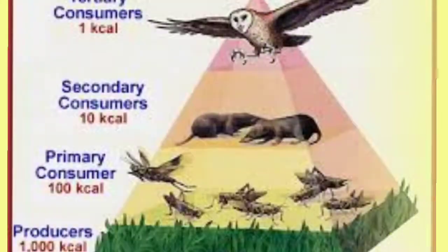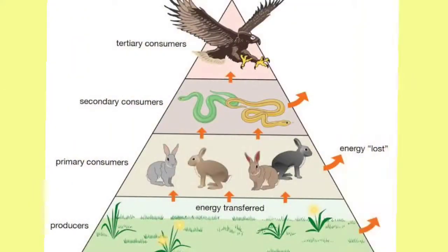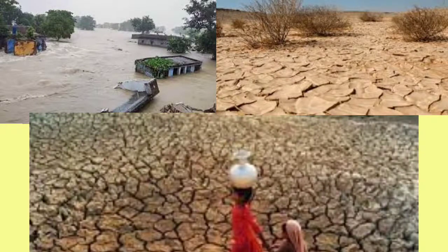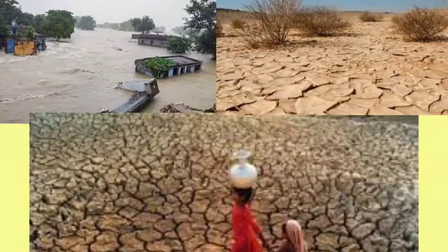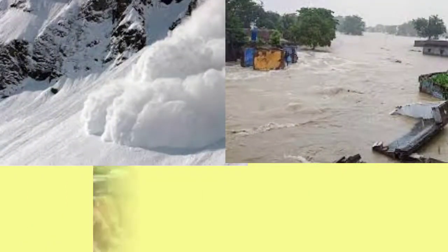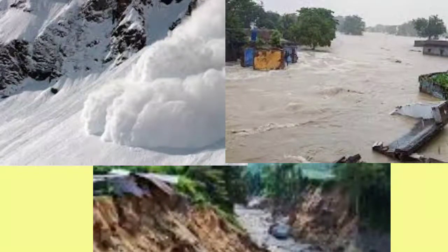Why are these flora and fauna conserved? They are conserved to encourage ecological stability and balance. If this is not maintained, there will be destruction of water, drought, and desertification. This area also prevents avalanches, landslides, and floods, because no human populations are found here.